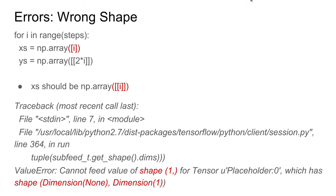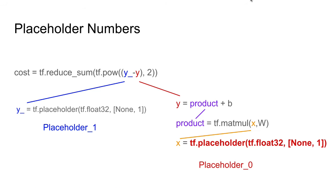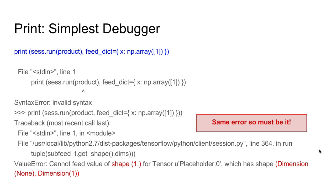Another common issue is the wrong shape. If xs is supposed to be a matrix with one column but you wrongly define it as one comma nothing, TensorFlow will complain that it is trying to assign x to a placeholder that does not match this shape. The expected shape is none comma one, meaning it expects a batch size and one column, but what you're providing has no columns. One simple way to find out about values when something goes wrong is to use a print statement to print out a session.run variable.